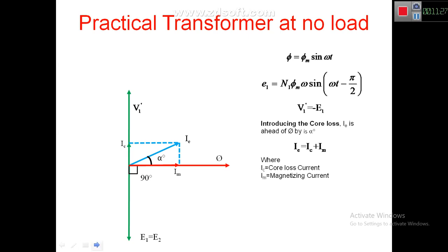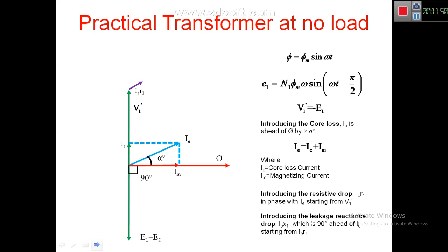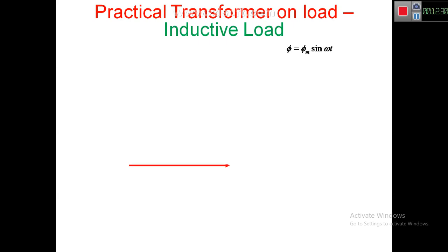Now introducing the resistive drop: Ie × R1 is in phase with Ie, drawn starting from V1'. After this, we introduce the leakage reactance drop Ie × X1, which is 90 degrees ahead of Ie. The summation of V1', Ie×R1, and j×Ie×X1 gives us V1. This is the main difference between the practical and ideal transformer — in the practical transformer we incorporate core loss (alpha), resistive drop Ie×R1, and reactance drop j×Ie×X1.